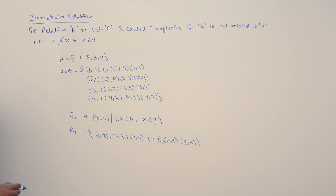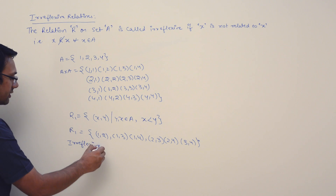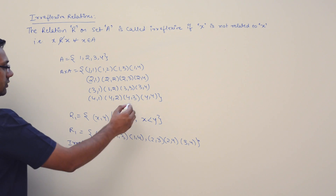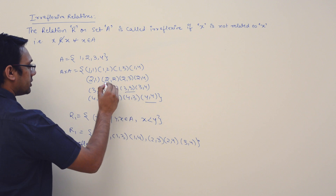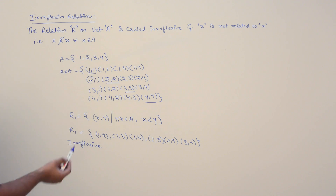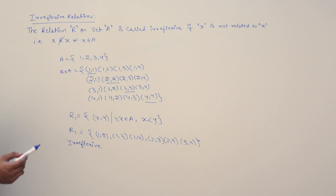This relation R1 is irreflexive. Why is it irreflexive? Because it does not contain the pairs (4,4), (3,3), (2,2), or (1,1). It does not necessarily mean you have to be missing all four pairs — even missing one or two makes the relation not reflexive.